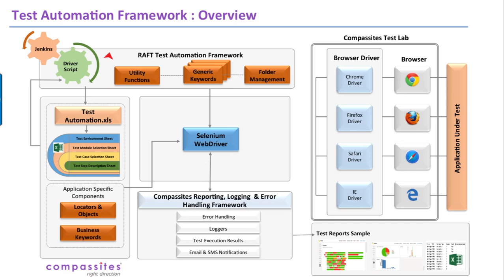All projects at Composites use a test lab — a set of machines where one acts as a hub and many nodes connect to it. These can be Mac, Windows, and Linux machines, and it can also connect to Android and iOS devices through the Composites test lab.